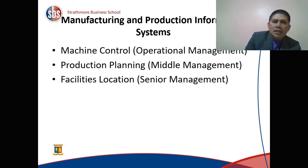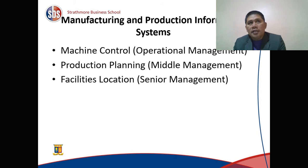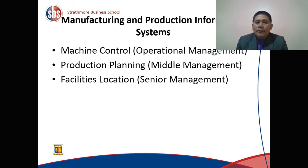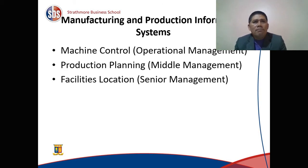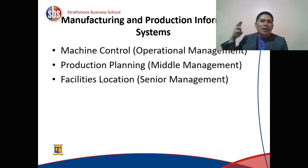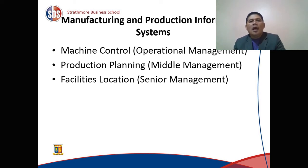Production planning is for middle managers. Remember, we discussed underproduction, overproduction, and misallocation of resources — a production planning information system will enable middle managers to plan production. Facilities location is for senior managers. Building a multi-billion dollar facility is a crucial decision with many variables: availability of raw materials, access to the premises, availability of manpower, and so on.